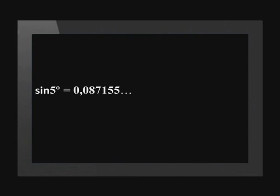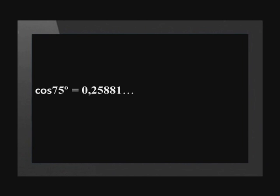Let's prove this relationship with some calculations. Sine of 5 degrees is equal to 0.08715 and so on. Cos of 85 degrees is equal to the same number. Cos of 75 degrees is equal to the same number as sine of 15 degrees.